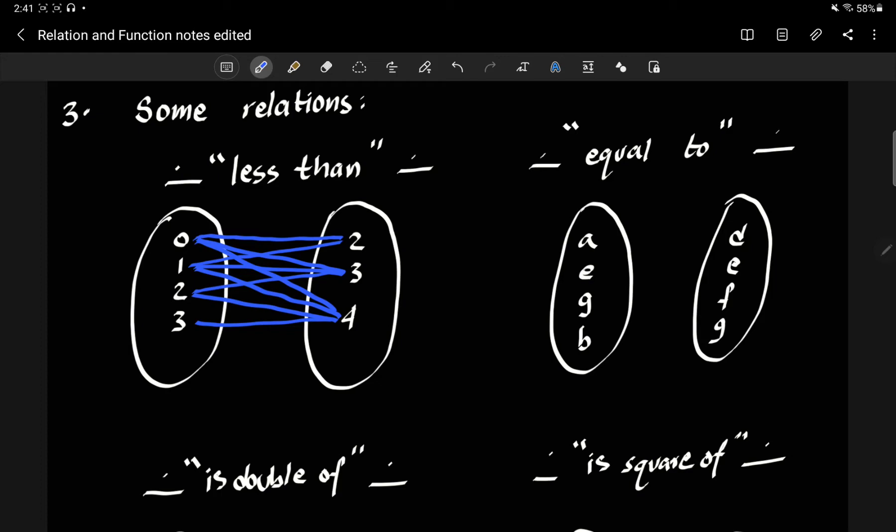And let's look at the second one. It says equal to. Okay, now let's check. Is A equal to D, E, F, G? No, it's not. So there's no line coming out of A. Is E equal to these? So E is equal to E, G is equal to G, and the others don't have lines.